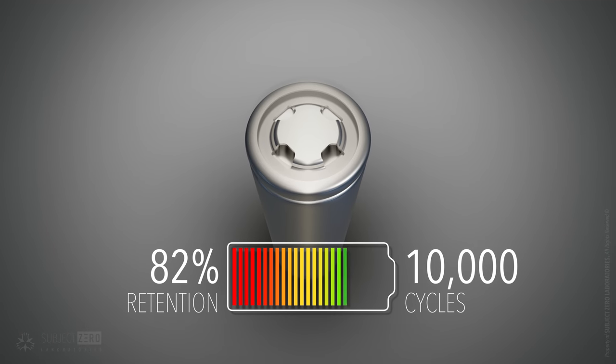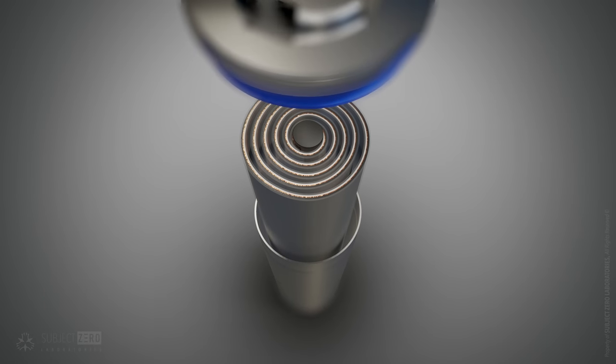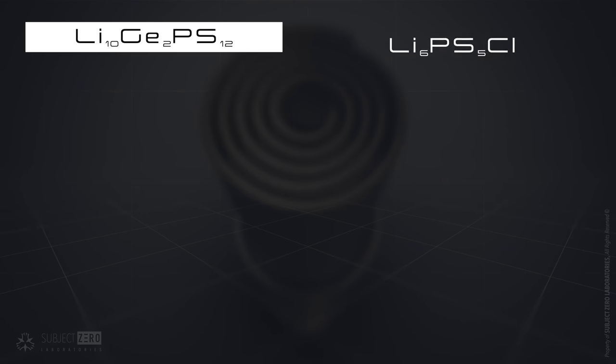With a capacity retention of 82% after 10,000 cycles, the first stable solid-state battery has come as an unconventional electrolyte mix, composed of lithium-germanium-phosphorus-sulfide and lithium-phosphorus-sulfide chloride.